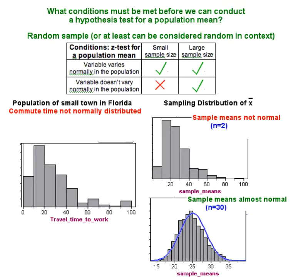Now let's think about situations where the variable is not normally distributed in the population, such as commute times for a small town in Florida. Sample means are not normally distributed for small samples. In fact, the sampling distribution looks pretty much like the population, which is really not that surprising when we're only collecting two people at a time.